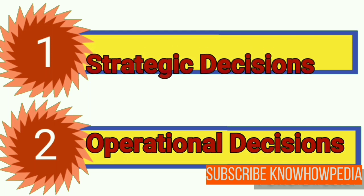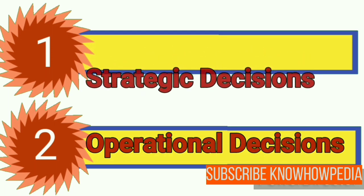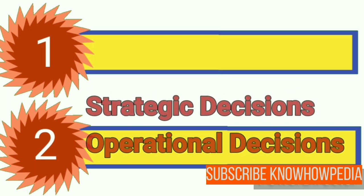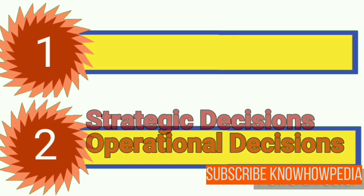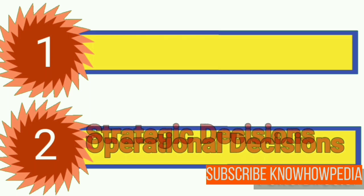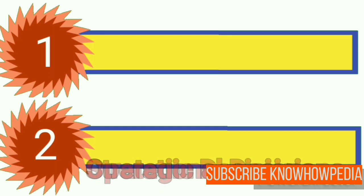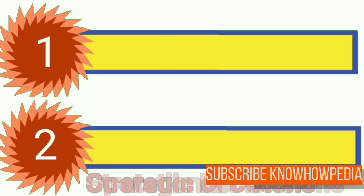On the other hand, operational decisions are those decisions which are taken at the floor level, which means they are taken at the bottom level where they interact with the customers. These decisions are having less impact, but they have to be done at a regular level.